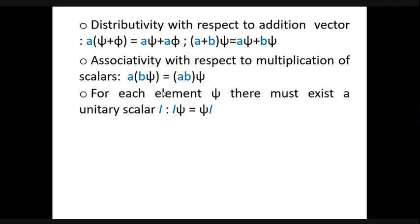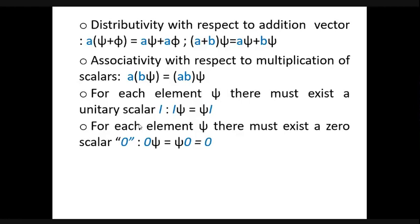For each element, there must exist a unity scalar — that is, 1 is a unity scalar. If we multiply the unity scalar 1 with psi, the order of multiplication doesn't affect the result: 1*psi equals psi*1 equals psi. Similarly, for each element psi, there exists a zero scalar such that if we multiply zero with psi, the result is again zero.